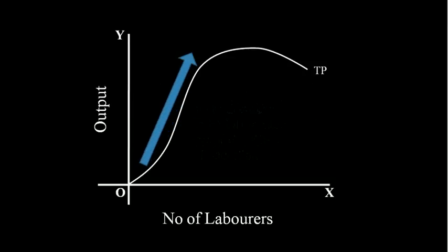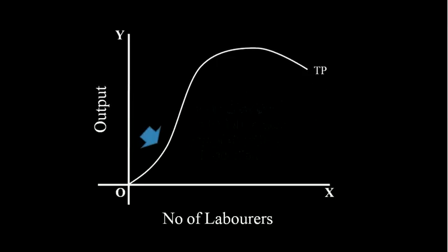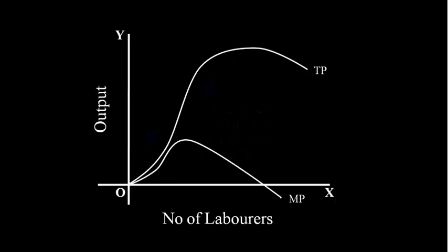The Total Product Curve rises first to the right, reaches the maximum, and then falls. In the rising part, it must be concave upwards, then concave downwards. Draw the Marginal Product Curve and name it. The maximum point of the Marginal Product Curve must be directly below the point of inflection — the point at which the Total Product Curve turns from concavity to convexity.